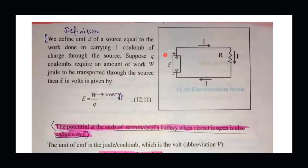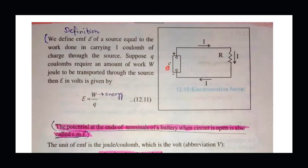Consider a circuit with an external battery and a resistor. When your circuit is open, the voltage or EMF is the open circuit case. The EMF is equal to the terminal voltage in an open circuit. As you close the circuit, current begins to flow through the external resistance.